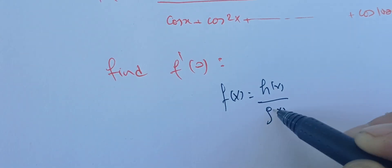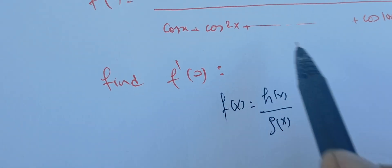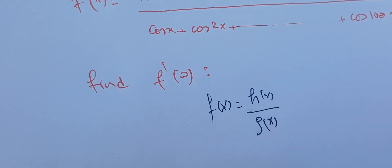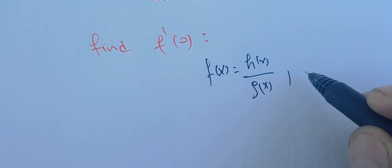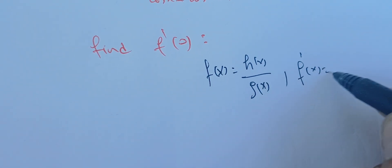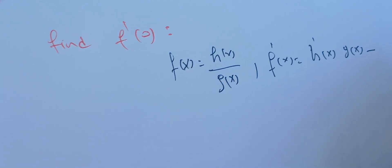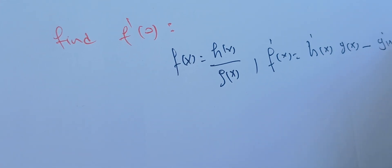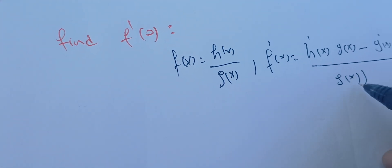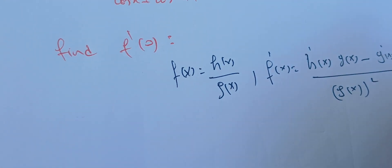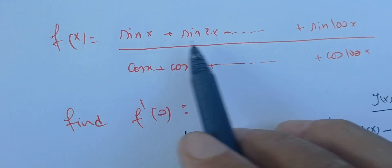Note that we write H(x) as the sum of the sines and G(x) as the sum of the cosines. We have two functions, and the quotient rule gives us: F prime of x equals H prime of x times G(x) minus G prime of x times H(x), all over G(x) squared — assuming G(x) is not zero.